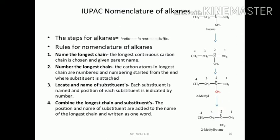Each substituent is named and its position is indicated by a number — it means 2-methylbutane. Rule number four: combine the longest chain and substituent. The position and name of substituents are added to the name of the longest chain and written as one word: 2-methylbutane. This is the IUPAC nomenclature of alkanes, explained with the example of 2-methylbutane.